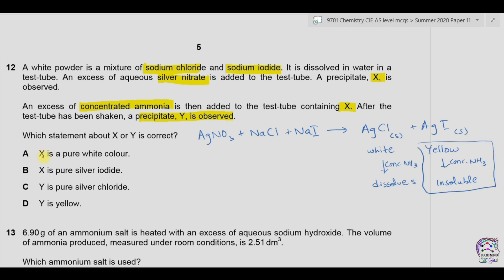Option A says X is pure white — no, X should be cream/off-white because X is silver chloride, so this is wrong. Option B says X is silver iodide — no, it is silver chloride. Option C says Y is pure silver chloride — no, Y is silver iodide. Option D says Y is yellow — so the only correct option is D.